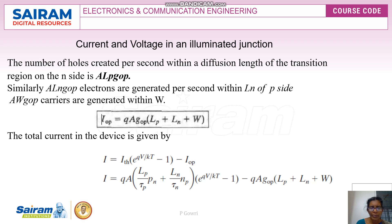The total current in the device is given by: I = I₀(e^(qV/kT) − 1) − Iop, where Iop is the current generated due to photon energy. Since the device is reverse biased, the generated photocurrent is opposite to the normal current and is therefore subtracted. Substituting the diffusion length formula, the final current equation is: I = qA[(Lp/τp)pn + (Ln/τn)np](e^(qV/kT) − 1).